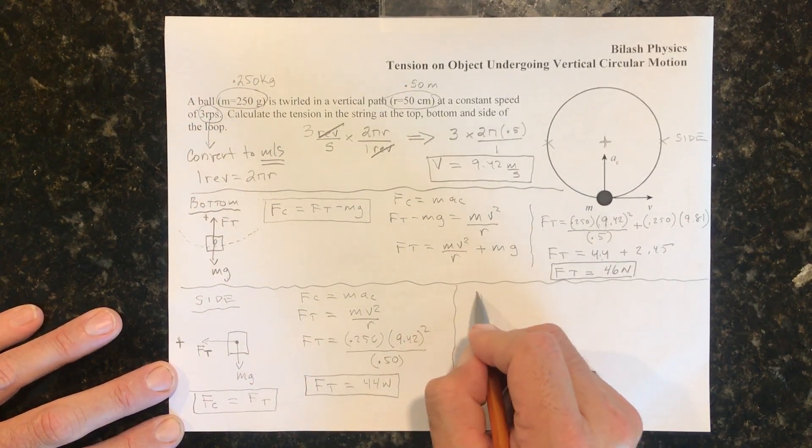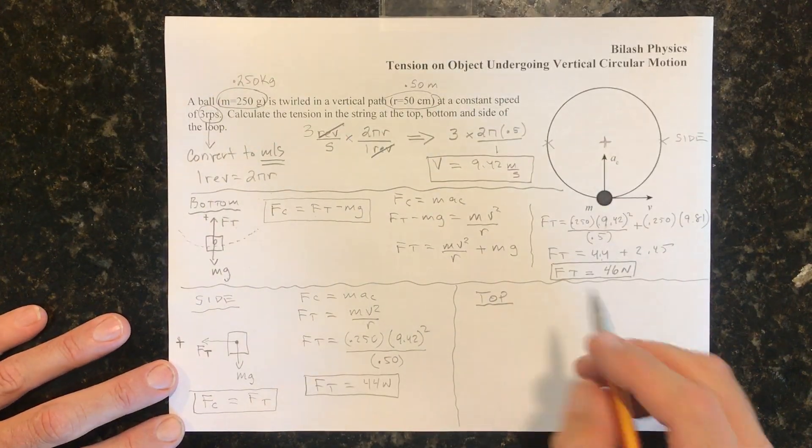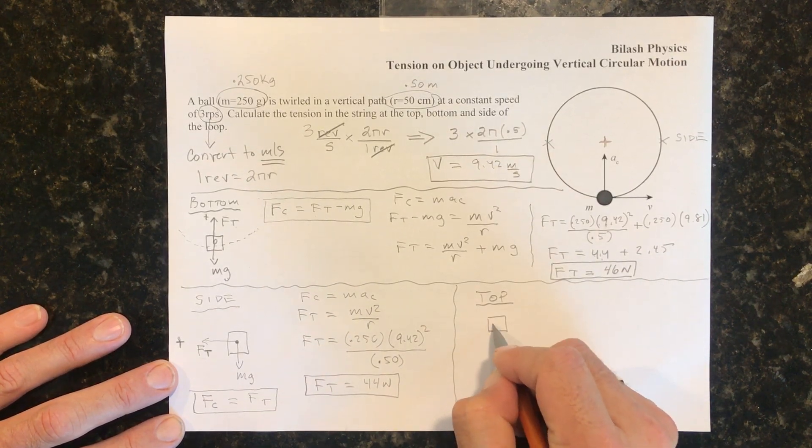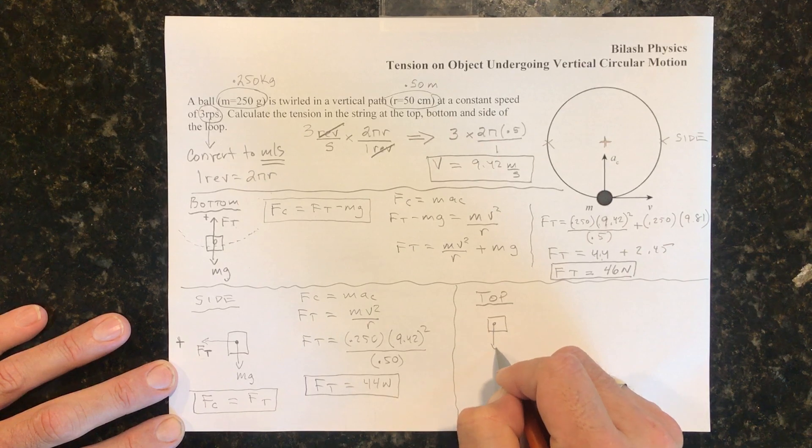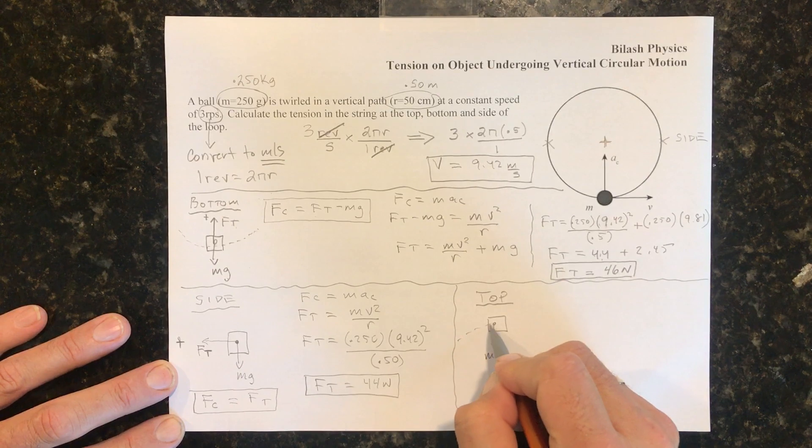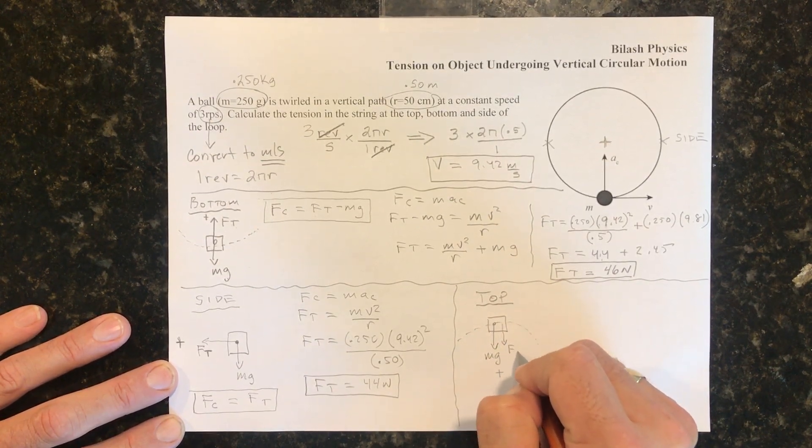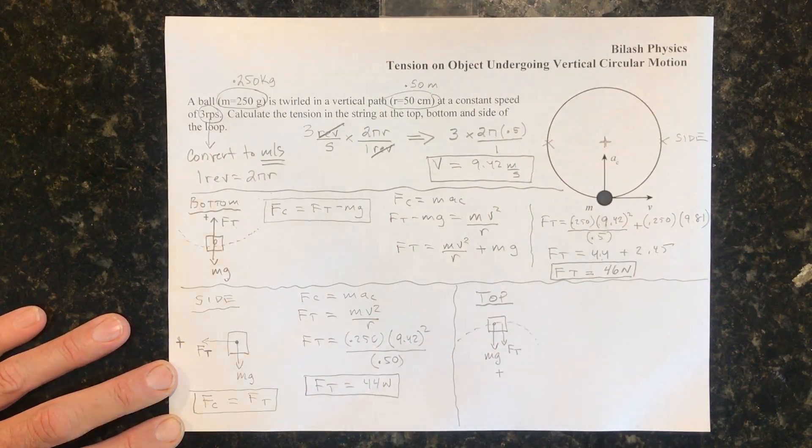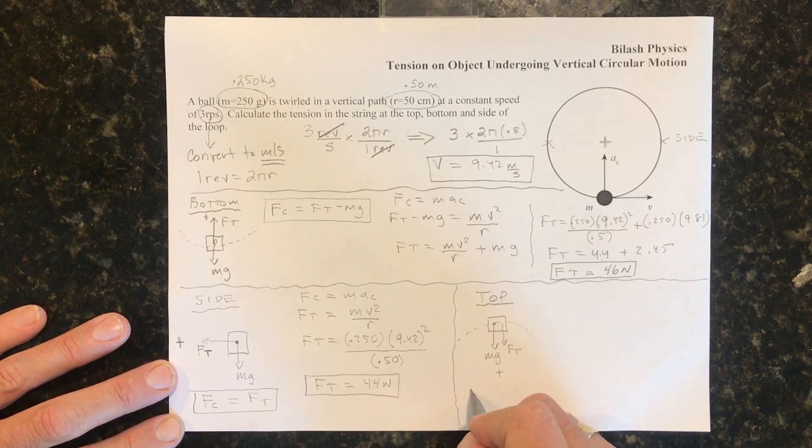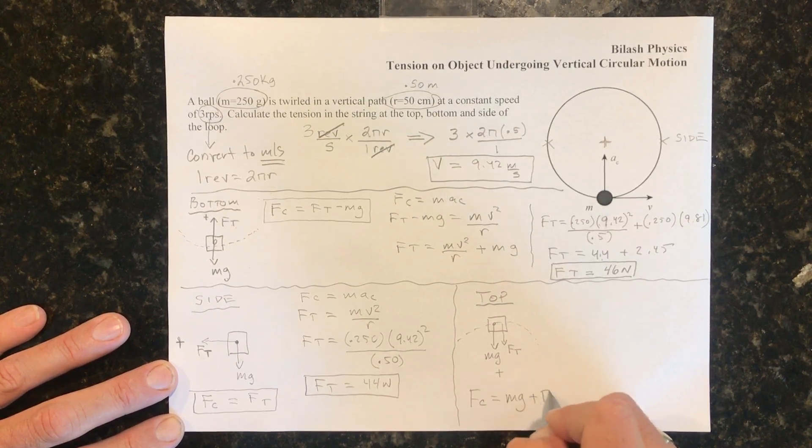So now let's look at the top. So when we draw the free body diagram at the top, we have two forces. We have mg pointing towards the center of the circle, like that. And we have Ft also pointing towards the center of the circle. So that means these two forces, we add them up. We have Fc is equal to mg plus Ft.